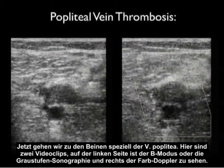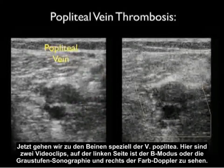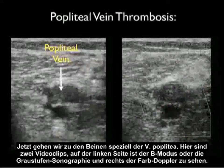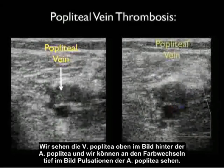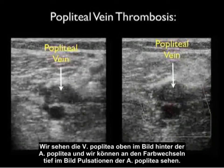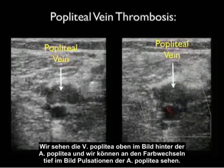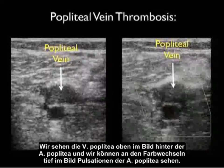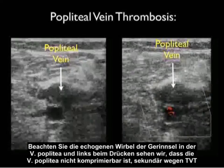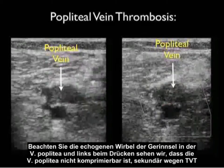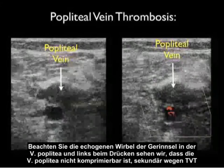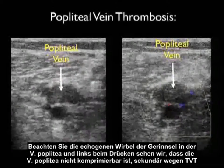Now let's move down the leg and look specifically at the popliteal vein. Here are two video clips — towards the left, a B-mode or grayscale sonography image, and towards the right, color flow Doppler. We identify the popliteal vein towards the top of the image, effectively posterior to the popliteal artery, and we can identify the color flow flashes and pulsations of the popliteal artery seen deep in the image. Notice the echogenic swirls of clot within the popliteal vein, and compressing down, we note the popliteal vein fails to compress secondary to the DVT.